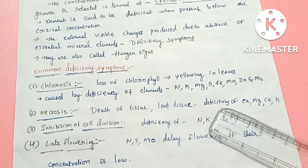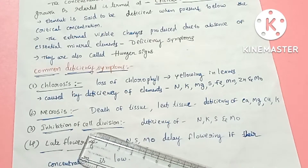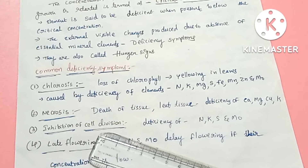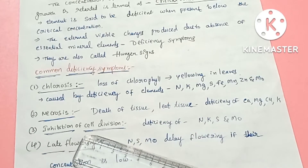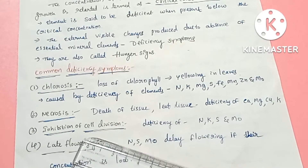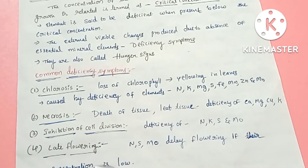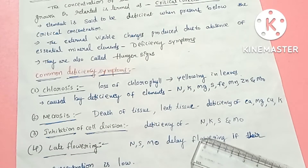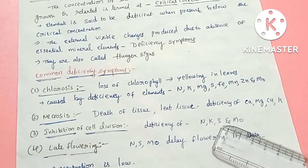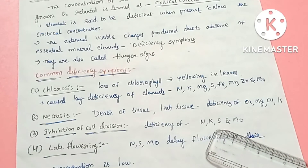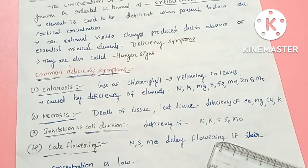The third deficiency symptom is inhibition of cell division. Plant cells also inhibit cell division when certain elements are deficient. The elements associated with inhibition of cell division include molybdenum, sulfur, and potassium.